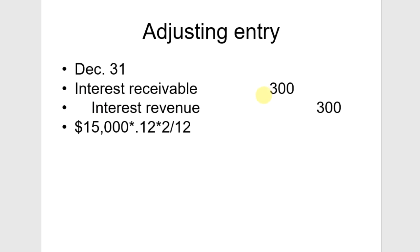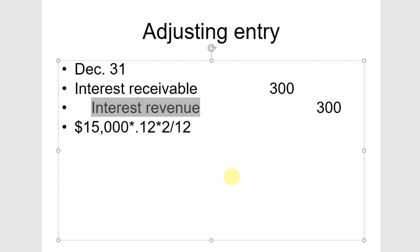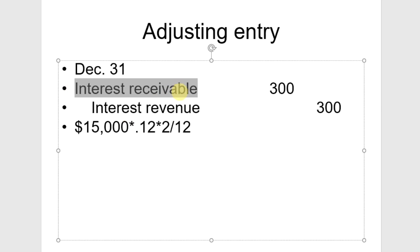Here is our interest receivable debit and here is our interest revenue credit, along with the calculation used. Recall that every adjusting entry involves one balance sheet account — interest receivable — and one income statement account — interest revenue. Adjusting journal entries never have cash. This interest revenue account will be closed to retained earnings at year end, but the interest receivable balance sheet account will still be there on January 1.